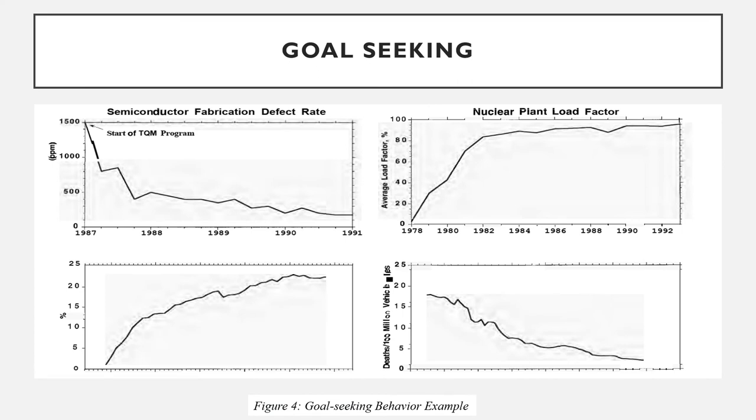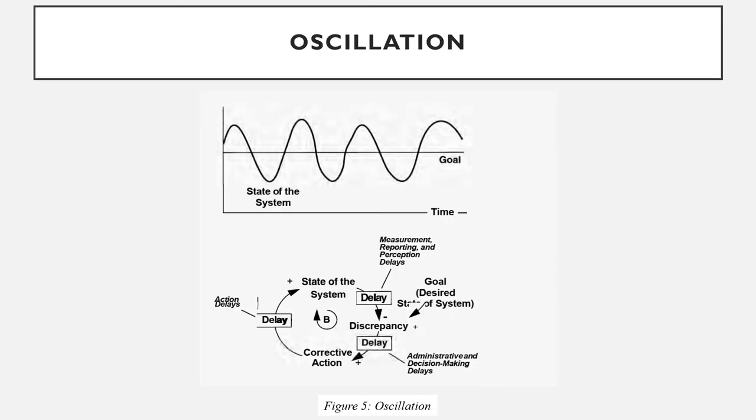Figure 4 provides another example of goal-seeking behavior. Figure 5 provides an illustration of oscillation. Oscillation is the third fundamental mode of behavior observed in dynamic systems. Like goal-seeking behavior, oscillations are caused by negative feedback loops.